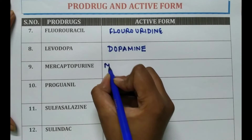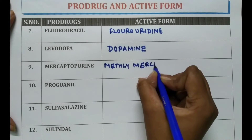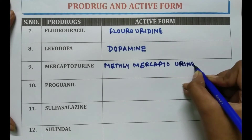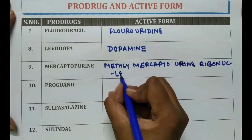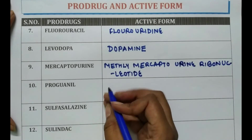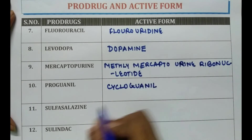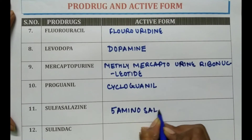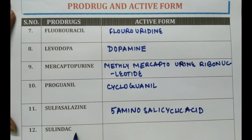Mercaptopurine is converted into methylmercaptopurine. Proguanil is converted into cycloguanil. Sulfasalazine is converted into 5-aminosalicylic acid. Sulindac is converted into sulfide metabolite.